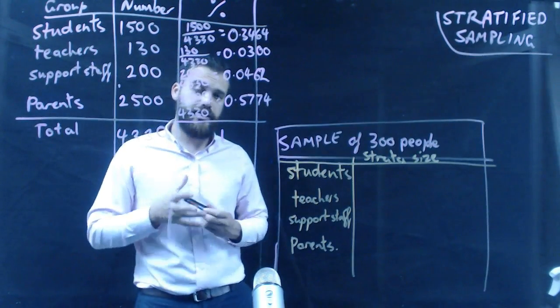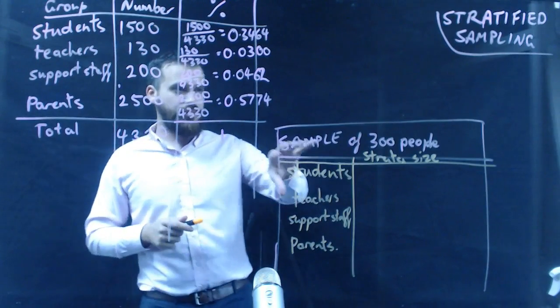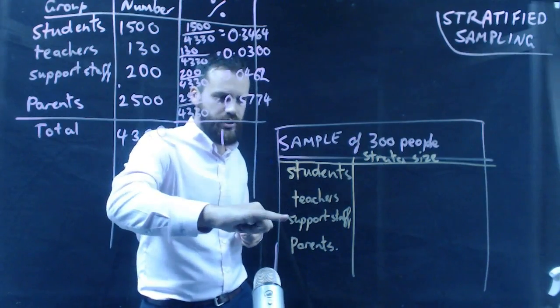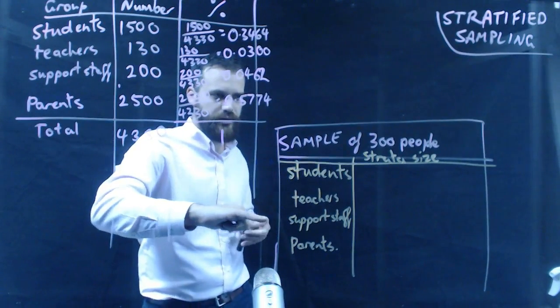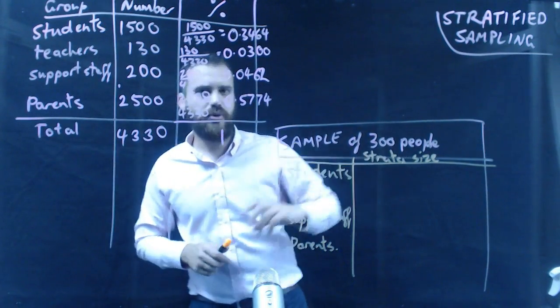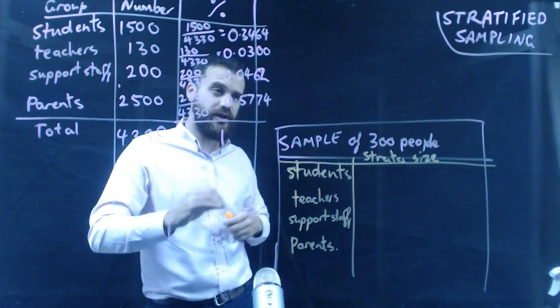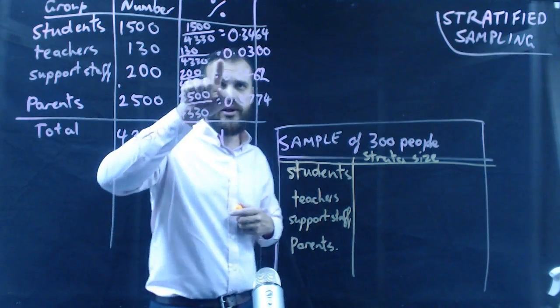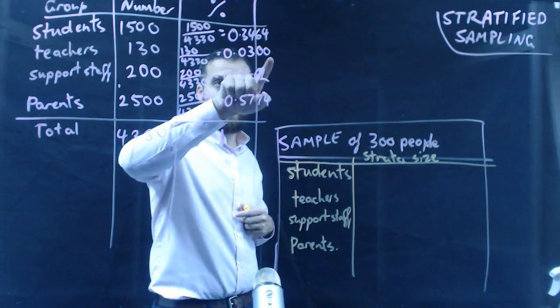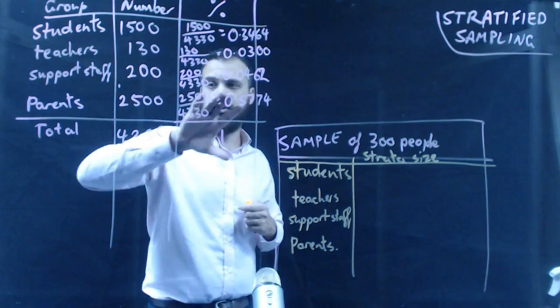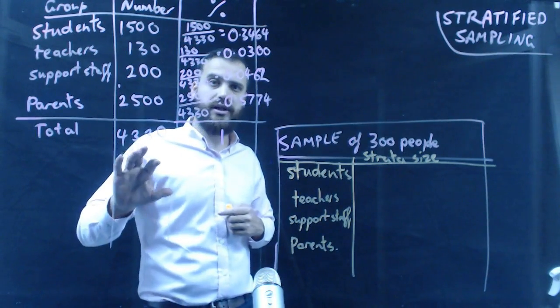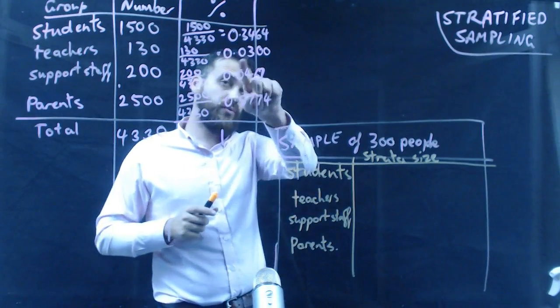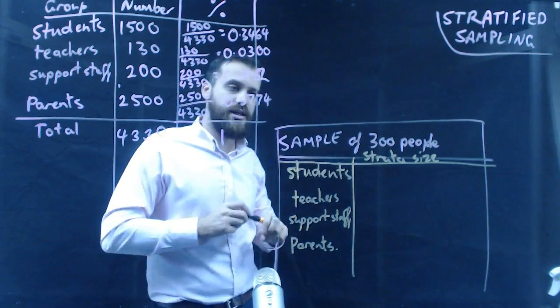All right, so sample of 300 people. We need a certain number of students, we need a certain number of teachers, a certain number of support staff, and a certain number of parents. Now, here, I'm going to figure out what my strata size will be for each of these people in my sample. It's actually a fairly straightforward piece of math. We know that 34.64%, or 0.3464, of our total 4,330 are students. So, we just need to get 34.64% of this number to be our sample.